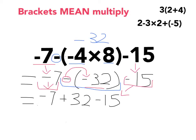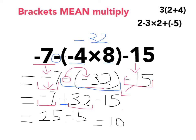So I've done my brackets. Next is orders — I scroll left to right, no orders. I look for division — left to right, no division. I look for multiplication — left to right, no multiplication. I look for addition — I find my addition symbol. I look to see what's on the left: negative 7. What's on the right: positive 32. So negative 7 plus 32 is 25. Then 25 minus 15 is 10. I move from left to right, do what is in the brackets first, then multiply what is directly next to the brackets with what's inside. It is really quite simple — brackets mean multiply.